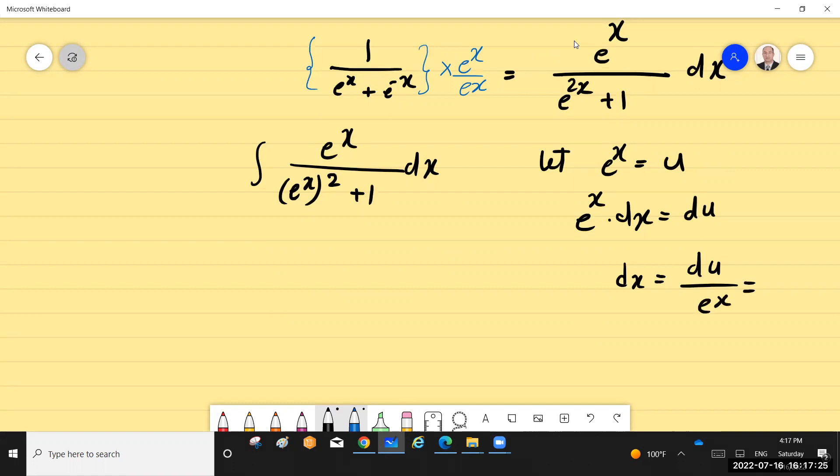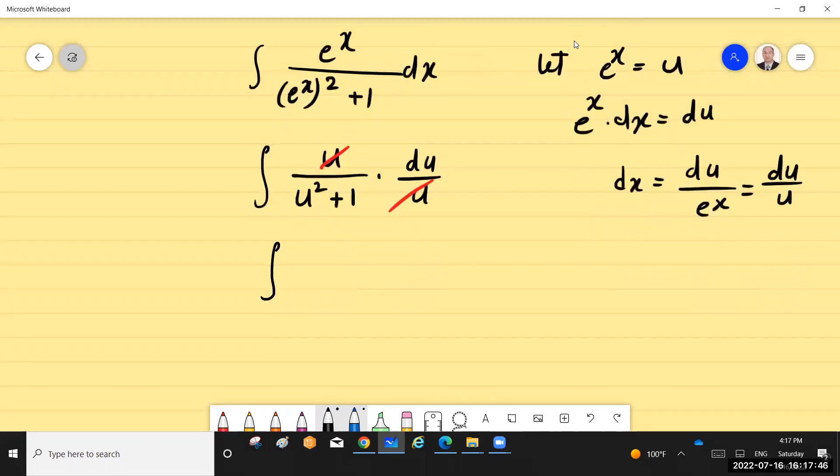to the x, which is u. So du over u. By substitution, you have integral of u over u² plus 1, and dx is du over u. By canceling u here, you have the integral of du...